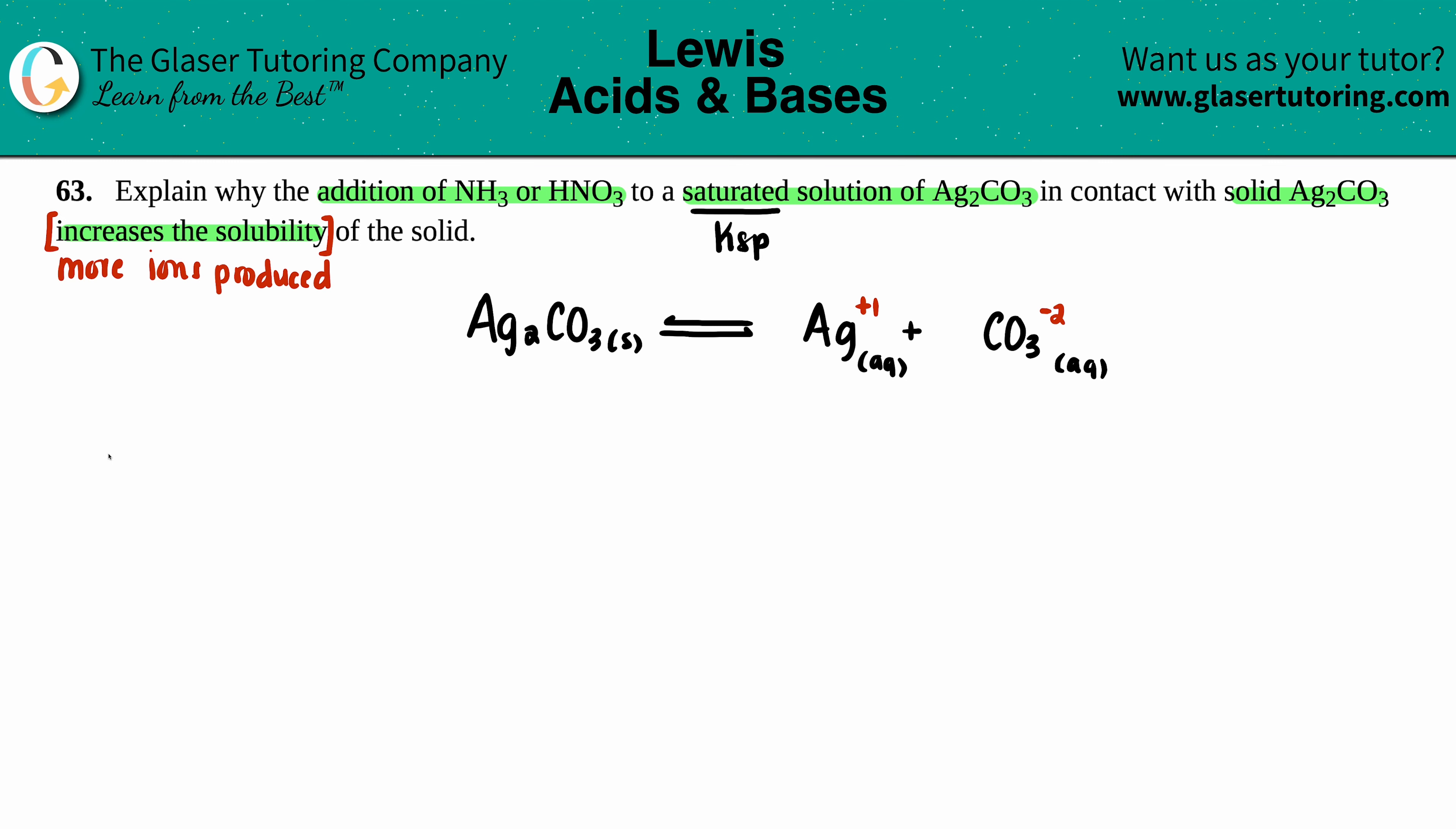So in this case, if we're increasing the solubility, that means that we're favoring the product side, right? Because I could go both ways. I could make more solid, or I could make more of my ions. For some reason, I'm making more of my ions, which means that the forward reaction is preferred. Well, why is that? Well, let's see. It kind of goes back to Le Chatelier's principle. Remember, if you're going towards a side, chances are you're probably removing these ions somewhere.